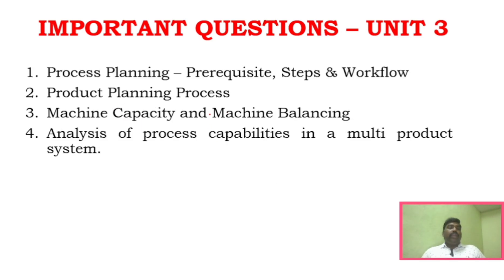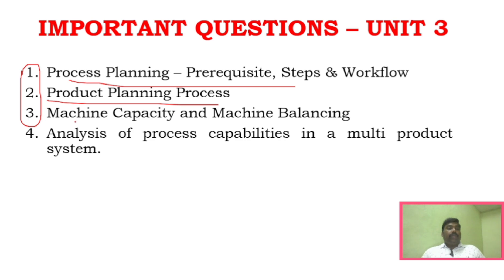For Unit 3, the important Part B questions include process planning — prerequisites and steps — and product planning. Machine capacity and machine balancing are also key. Analysis of process capabilities in multi-product systems is another important area. If you go through these three or four questions it will be sufficient.